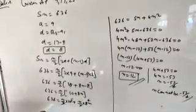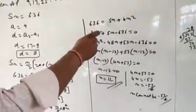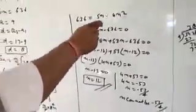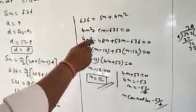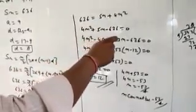Then 636 equal to 5N plus 4N square. Then 4N square plus 5N minus 636 equal to 0.